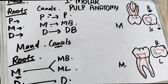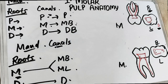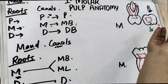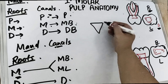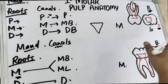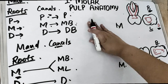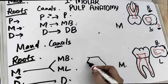For the mandibular first molar, there are two roots but three canals: the mesial root has the mesio-buccal and mesio-lingual canals, and the distal root has the distal canal. The access cavity shape for the maxillary first molar is triangular, but when preparing the pulp roof it is rhomboidal. For the mandibular first molar, the access cavity is trapezoidal.